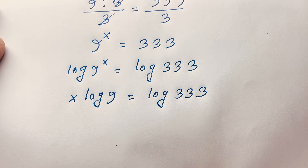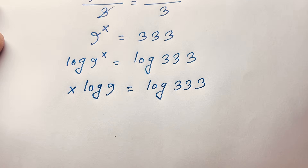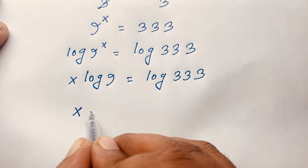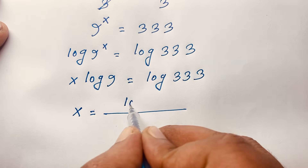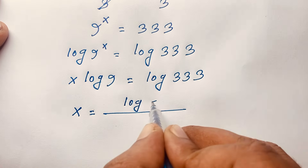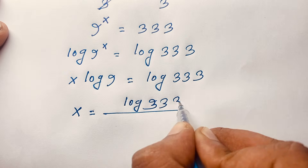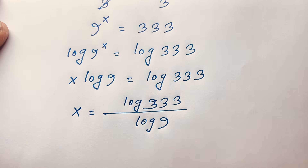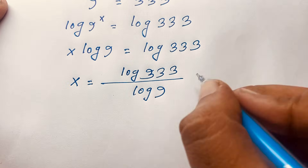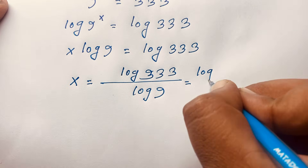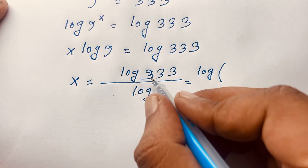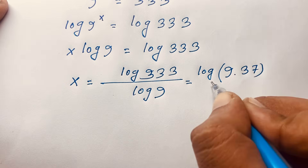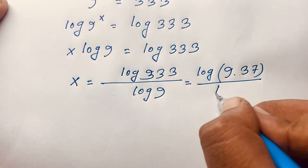Now, if I divide both sides by log 9, we find x is equal to log 333 over log 9. If I evaluate this expression, you can see that 333 equals 9 times 37, so we have log of 9 times 37 over log 9.